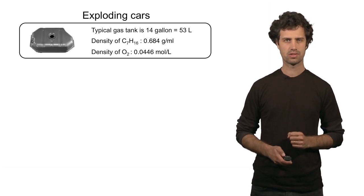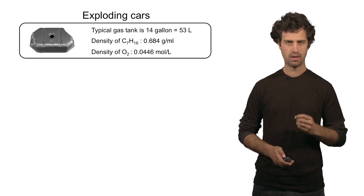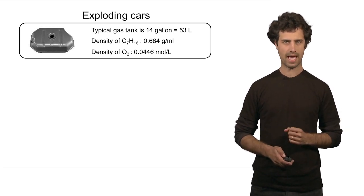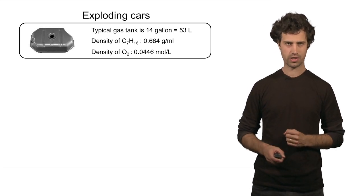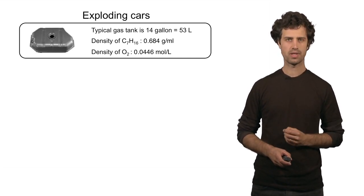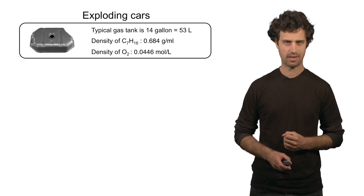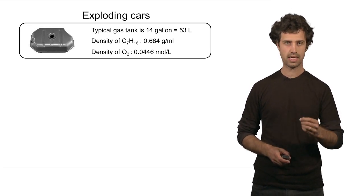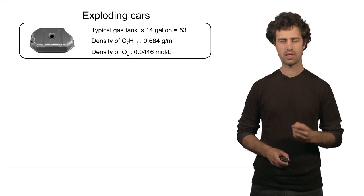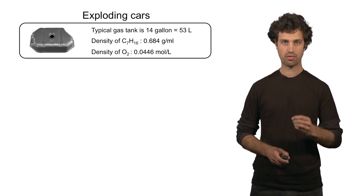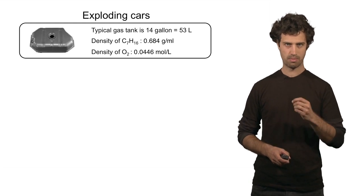We need a few more ingredients to do this calculation. The first one is the volume of the gas tank, that's about 14 gallons or 53 liters. You will also need the density of heptane, that is 0.684 grams per milliliter. The density of oxygen is 0.0446 moles per liter.